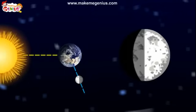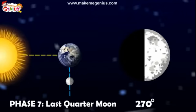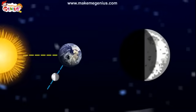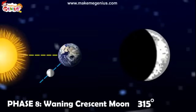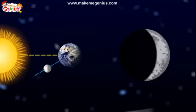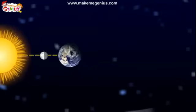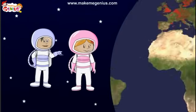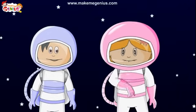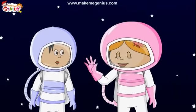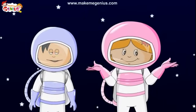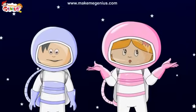Phase 7 is the last quarter. The moon appears half lit again. Phase 8 is the waning crescent moon — this is the last phase before the next new moon. The moon takes about 29.5 days to complete a cycle through all 8 phases. This is known as the lunar month.